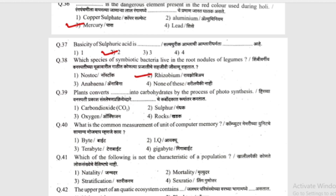Plants convert carbon dioxide into carbohydrates by the process of photosynthesis. (Hirivya vanaspatichya prakash saunshleeshan prakriya dvare carbon dioxide che karbodakat rupantra karta.)